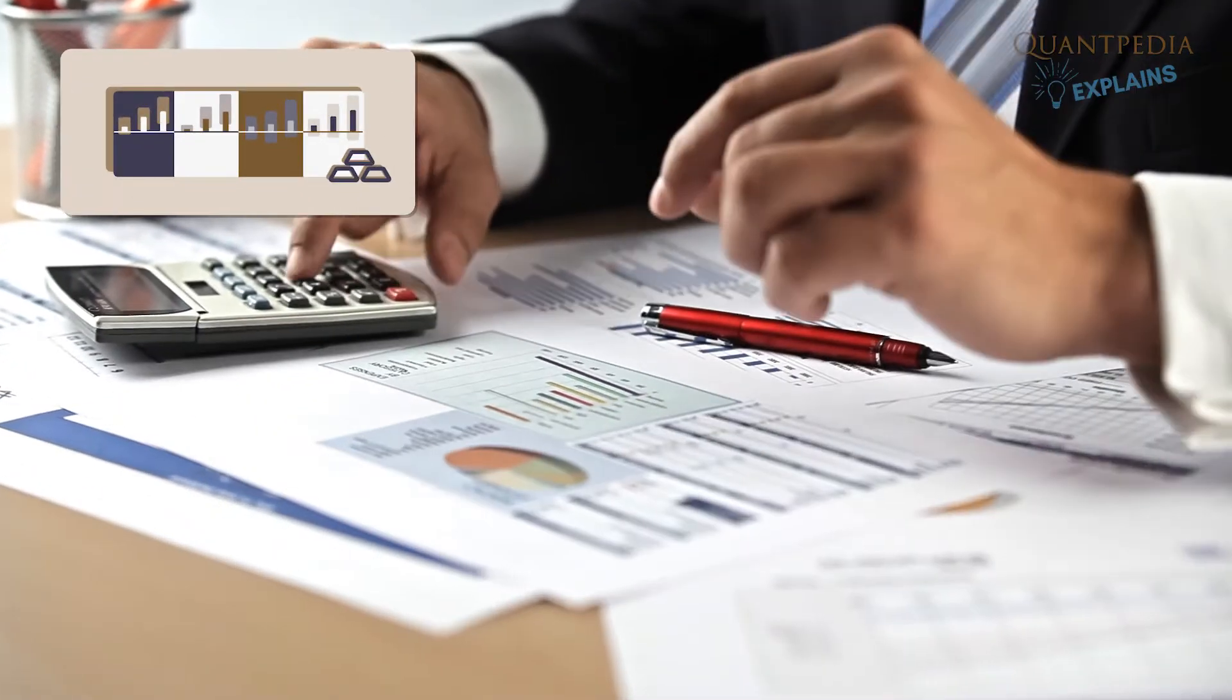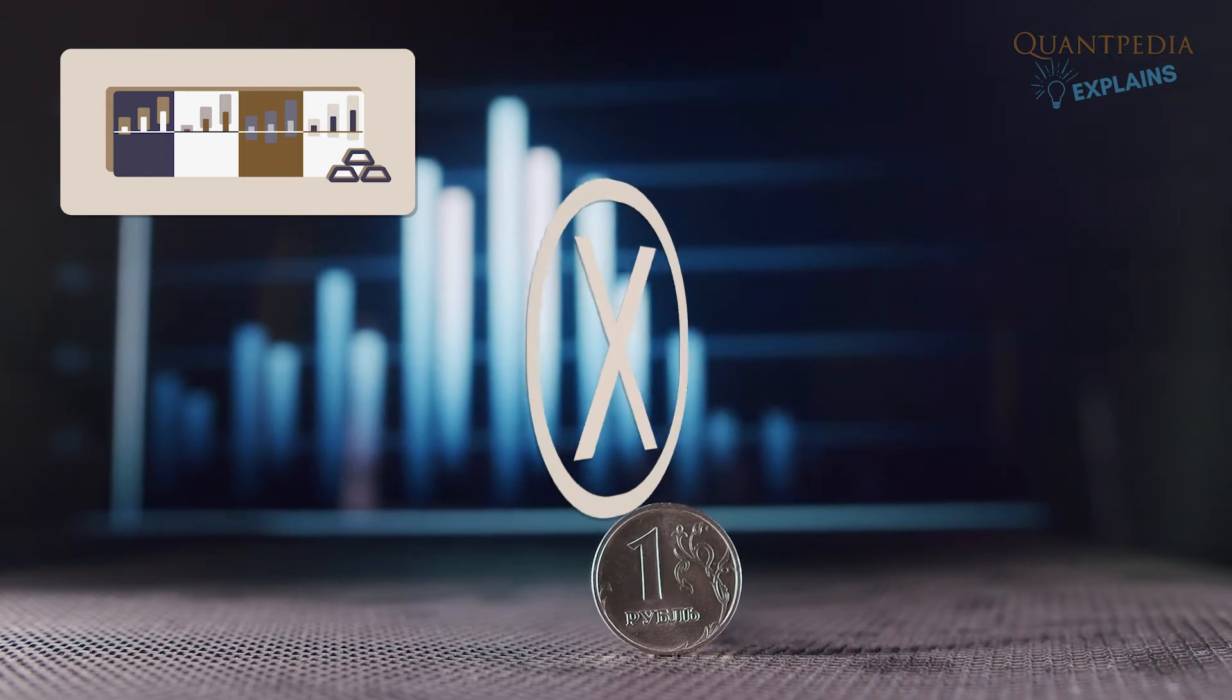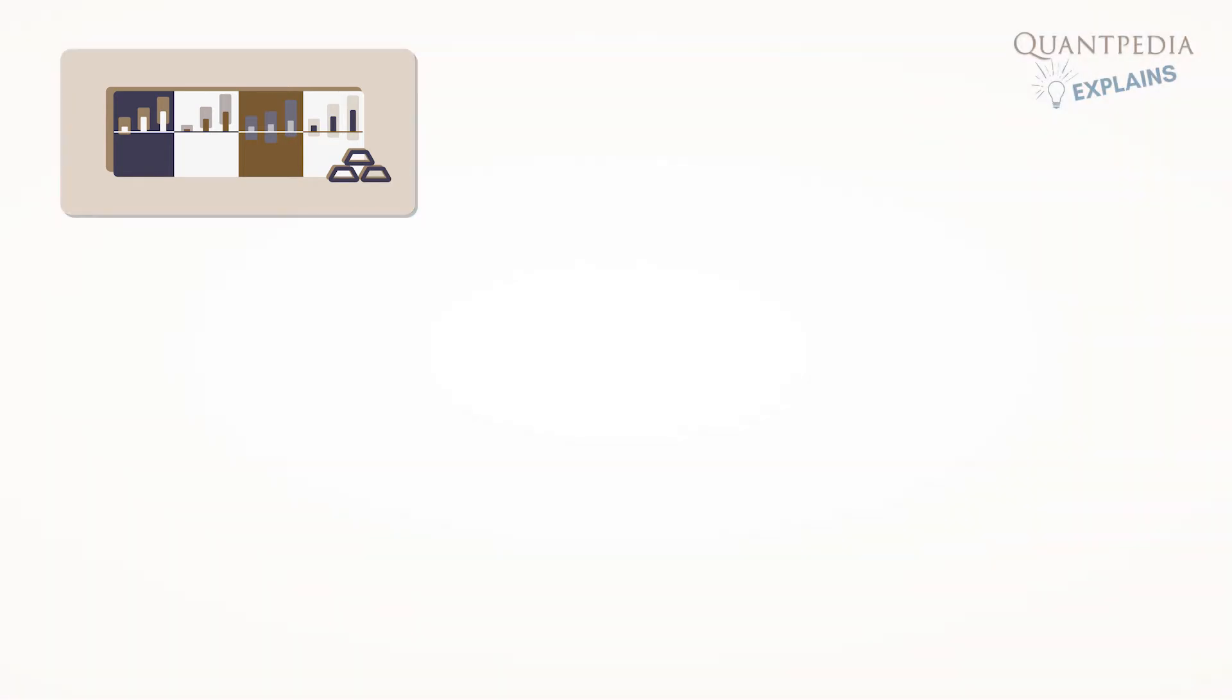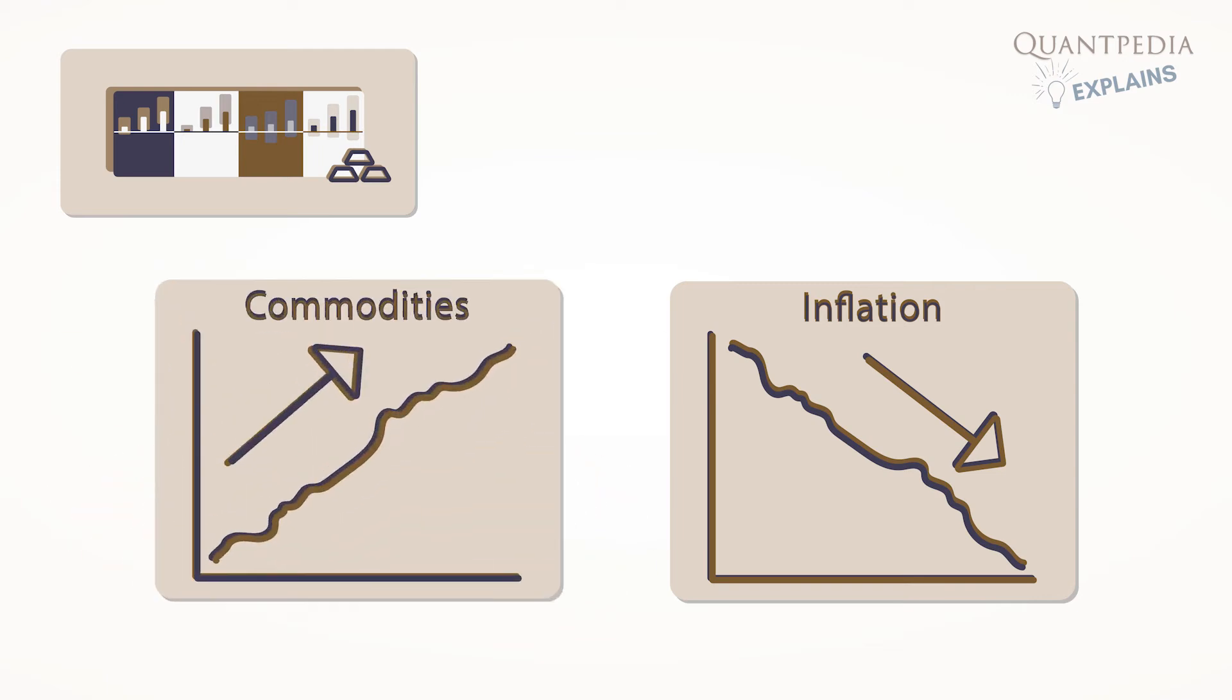The Commodity Market Phases report does not directly measure inflation, but the commodity price movements are highly dependent on it. So, when commodities fall, inflation falls, and conversely, if commodities rise, inflation rises.